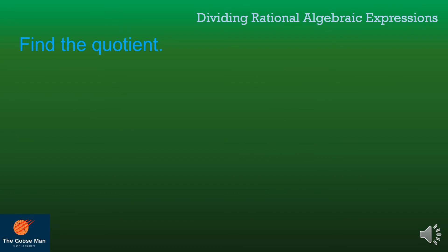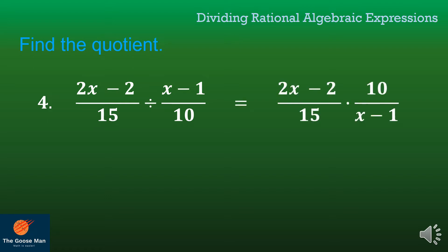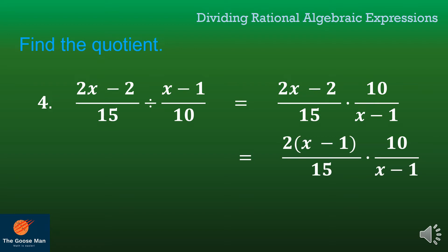Let's have example number 4. I have 2x minus 2 all over 15, divided by x minus 1 all over 10. I'll copy my dividend, then the division symbol becomes multiplication, and get the reciprocal of the divisor. Take note that there's a common factor between 2x and negative 2, so I'll factor it out: I have 2 times (x minus 1), because 2x divided by 2 is x, and 2 divided by 2 is 1, keeping the negative sign.